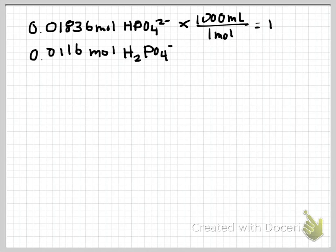And so you get 18.3 mL of your stock base, the dipotassium phosphate, and 11.6 mL of my acid, my monobasic potassium phosphate.